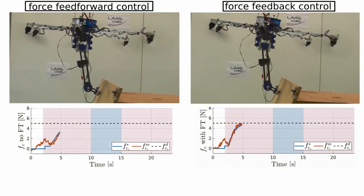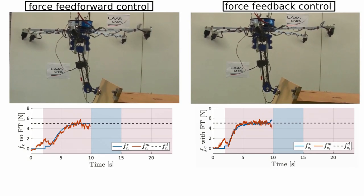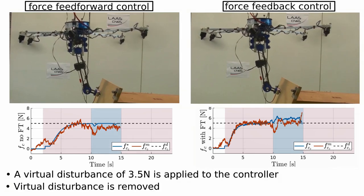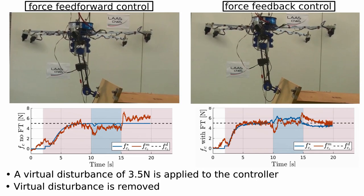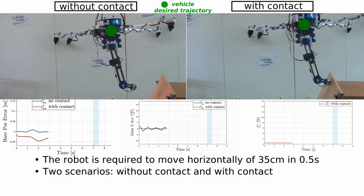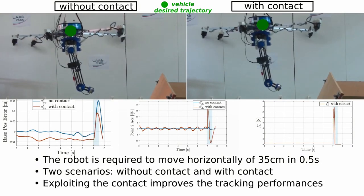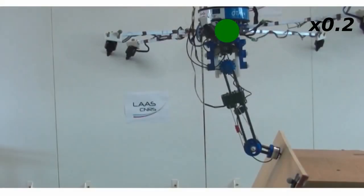In the second experiment, we evaluate the controller with and without force feedback. In particular, the robot pushes against the wall with a force of 5 N, then a virtual disturbance force is applied to the robot. When the force feedback is included, the controller can reject the disturbance and keep good tracking performance. In the last experiment, the robot is required to perform highly dynamic movements, exploiting the contact force in order to improve the tracking of the required base frame accelerations.